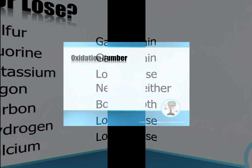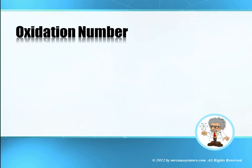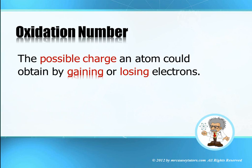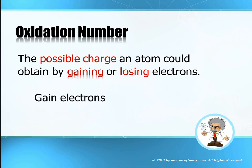Now let's look at oxidation numbers, which are directly related to what we just learned. The oxidation number is the possible charge an atom could obtain by gaining or losing electrons. Remember, electrons are negative, which means if you gain something negative you become more negative, and if you lose something negative you become less negative or more positive. So: lose electrons — positive; gain electrons — negative.